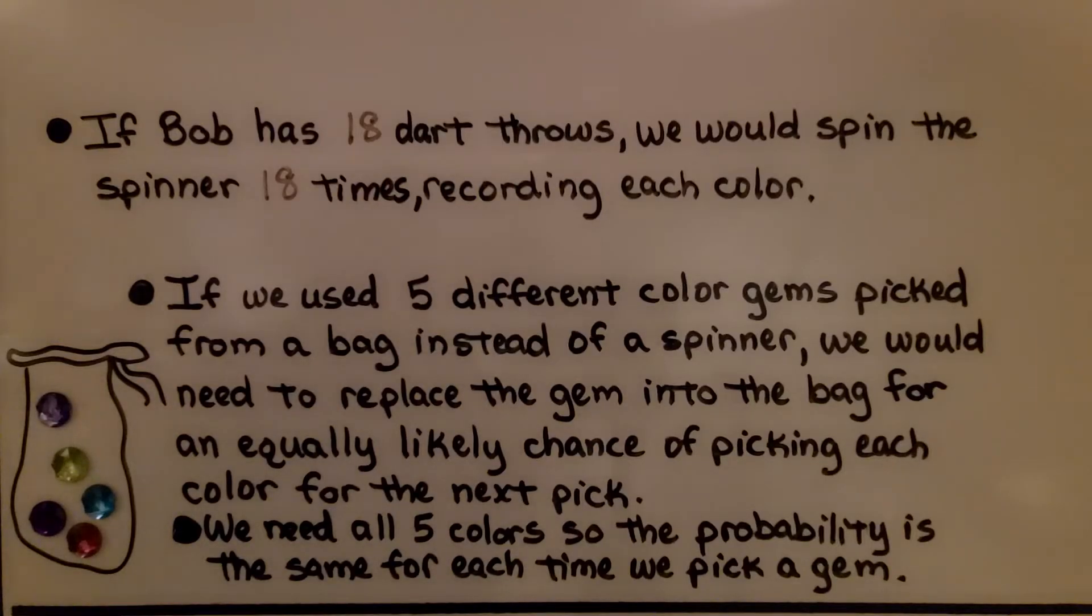If Bob has eighteen dart throws, we would spin the spinner eighteen times, recording each color. If we used five different color gems picked from a bag instead of a spinner, we would need to replace the gem into the bag for an equally likely chance of picking each color for the next pick. We need all five colors, so the probability is the same for each time we pick a gem.